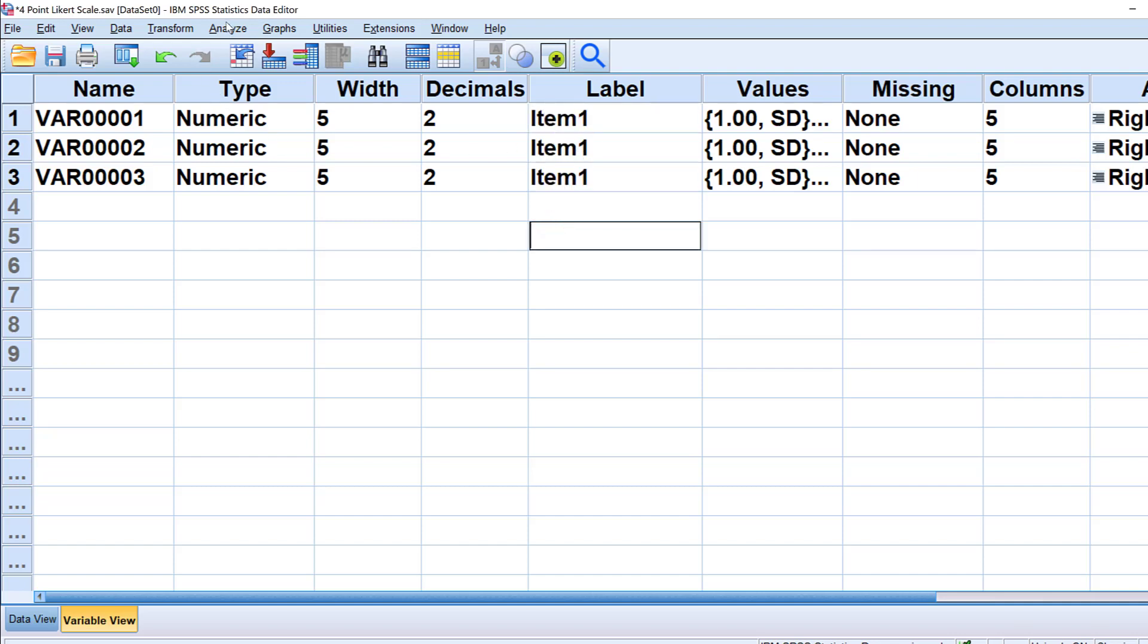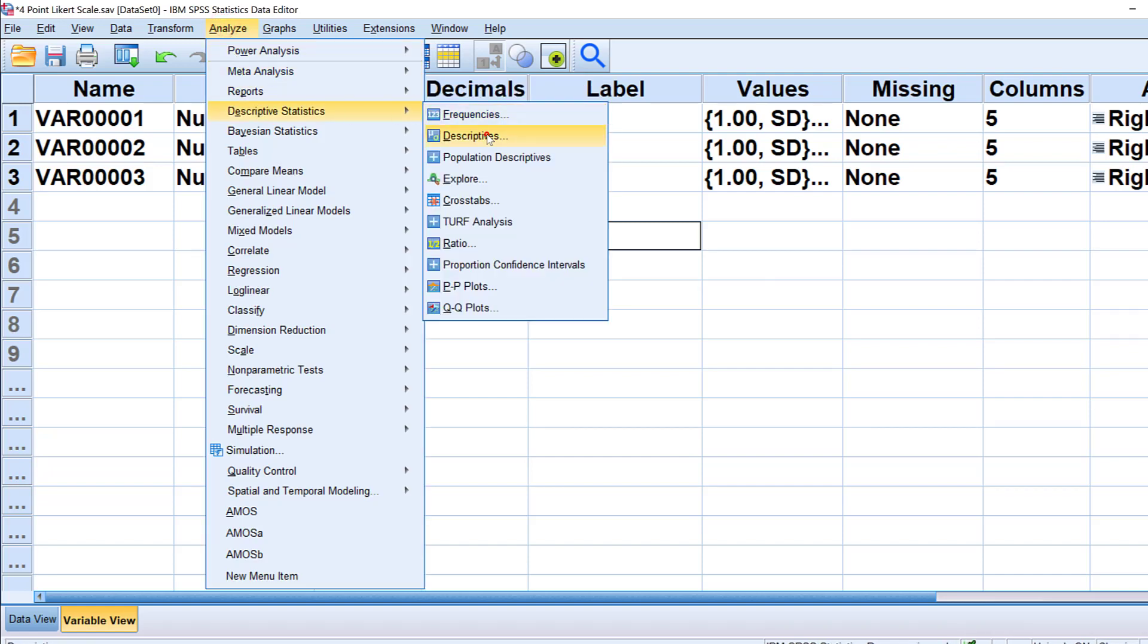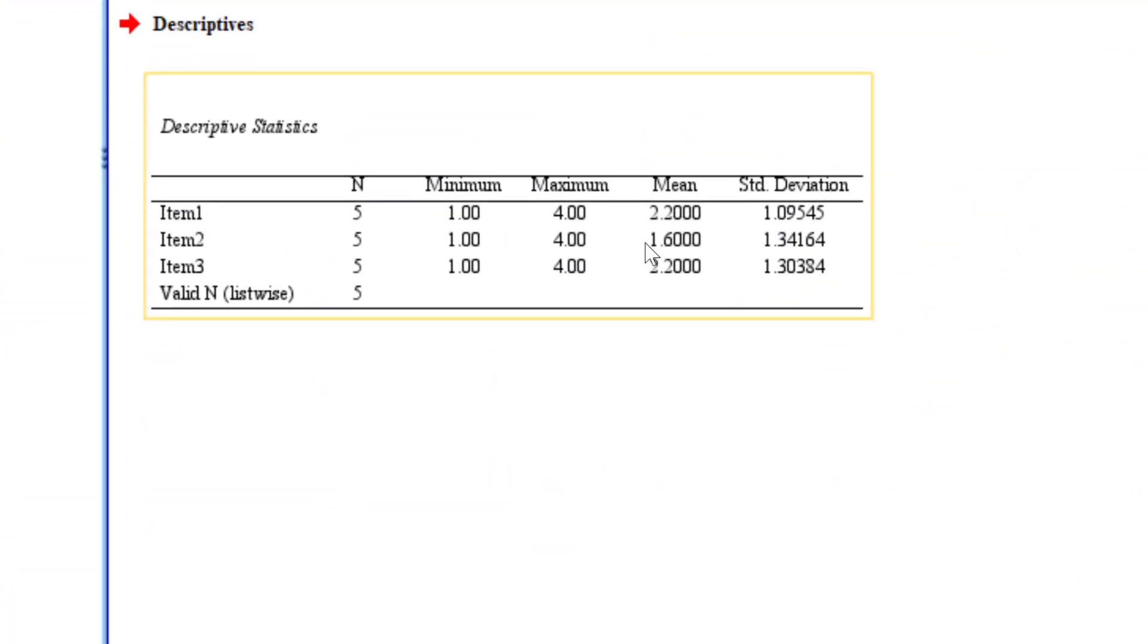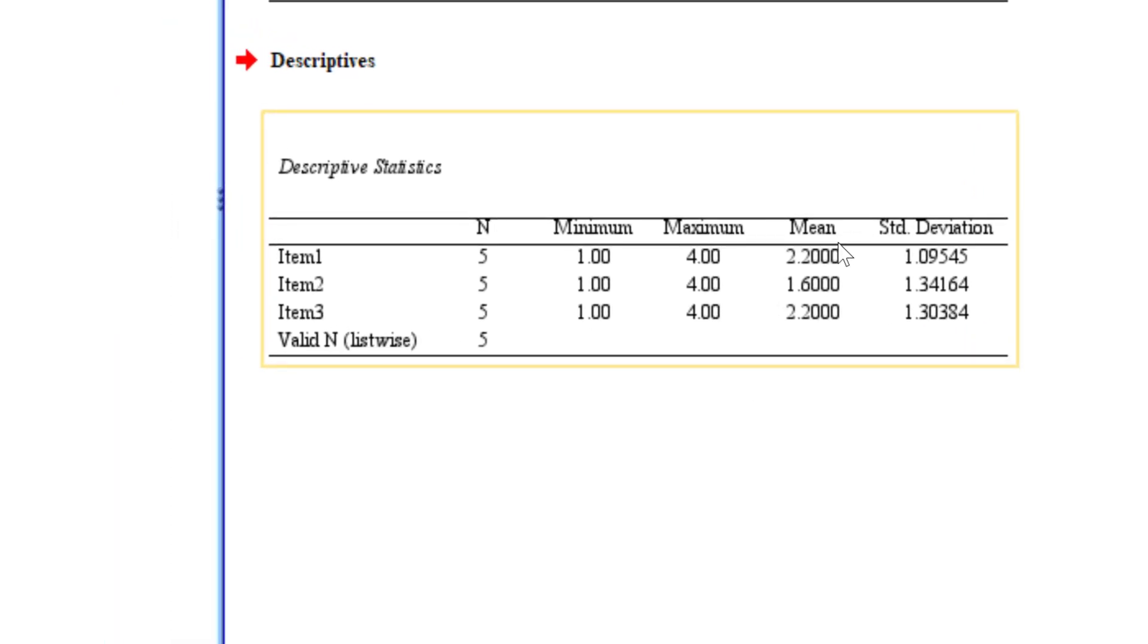I want to analyze the mean scores. I would just go to Analyze, then Descriptive Stats, then Descriptives, and I would put these variables here and click OK. Each statement has a certain mean score, and based on the intervals that we described, we will see what most respondents did.